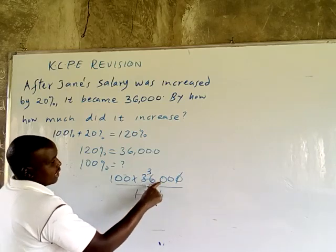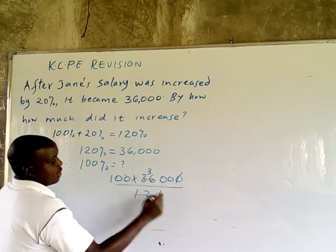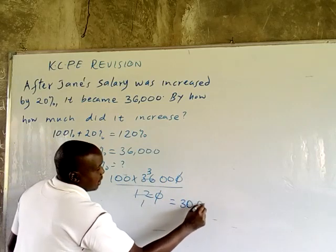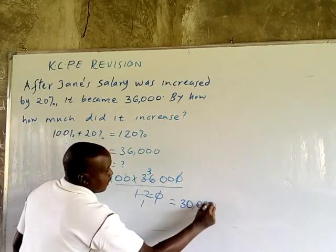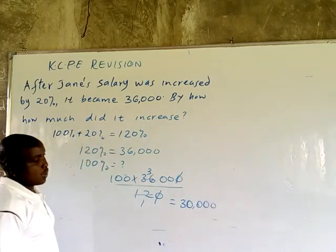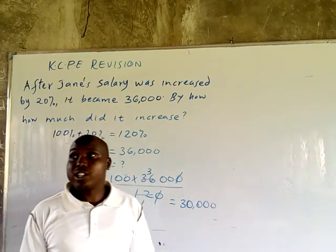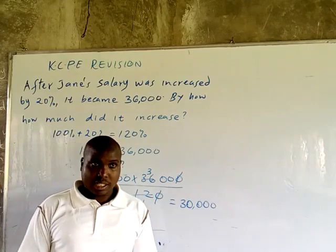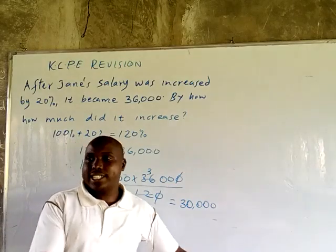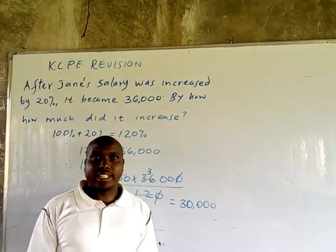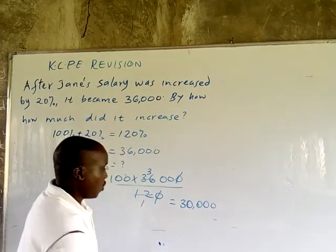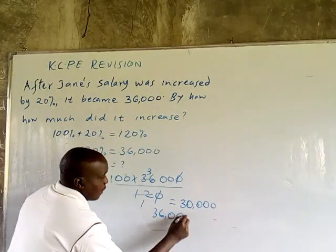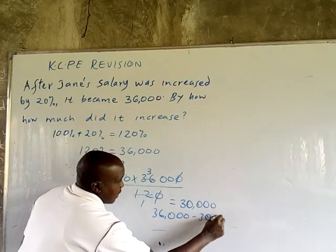So it will be 300 times — this way it will be 30,000. Therefore, the salary before the increase was 30,000. Now the question is: by how much did it increase? So it is 36,000 minus 30,000.